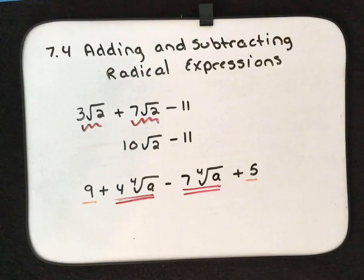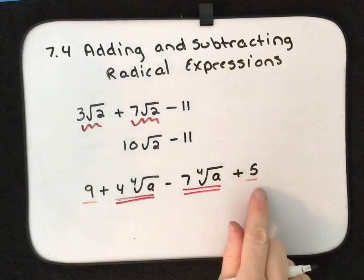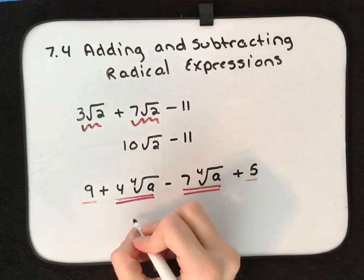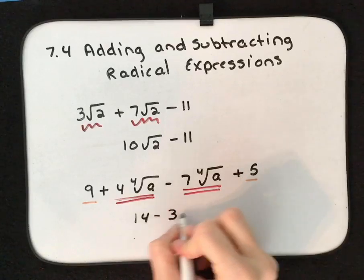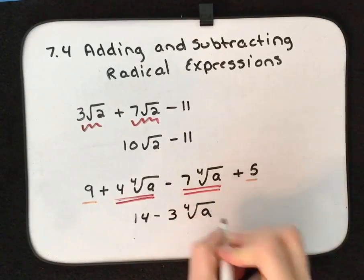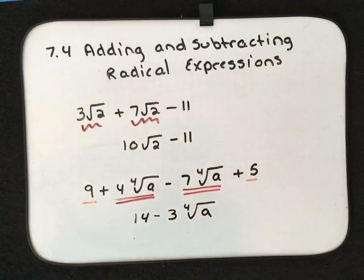So we need to simplify both of these. We have 9 + 5, that gives us 14. We have 4 - 7, that gives us -3. We can't combine these together because they are not like terms.